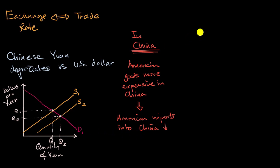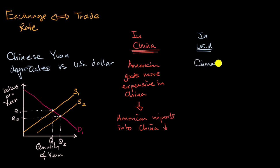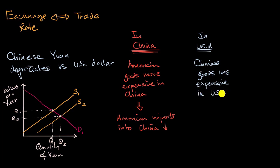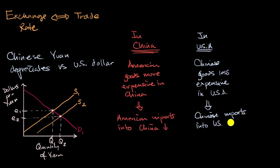Now what about in the United States? Assuming that Chinese goods are offered at a fixed Yuan price, you now need fewer dollars per Yuan. So Chinese goods are going to be less expensive to American buyers — less expensive in the US — because each dollar buys more Yuan, and the goods have a fixed price in Yuan. So Chinese imports into the US are going to go up.